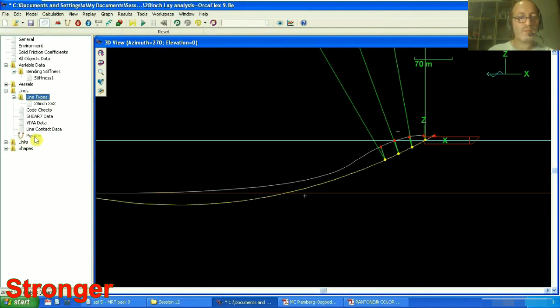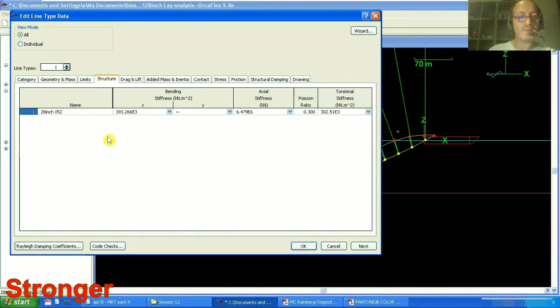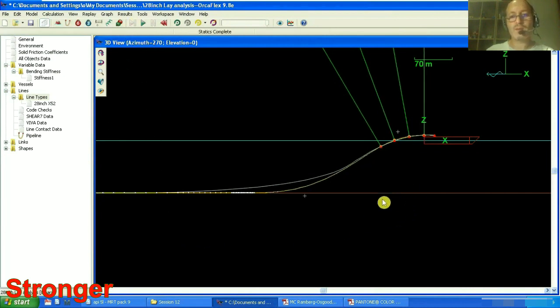This is our pipeline. Since we have just one line type, so this pipeline should be the same type. Just we open that form, go to structure. And in the bending stiffness section, we can select this stiffness one and press OK. And now I'm doing the static analysis. It's done.